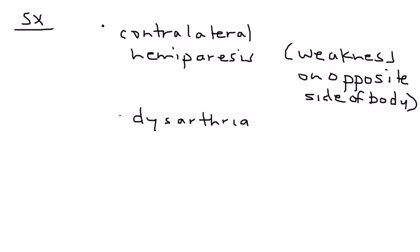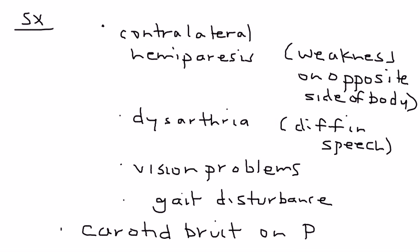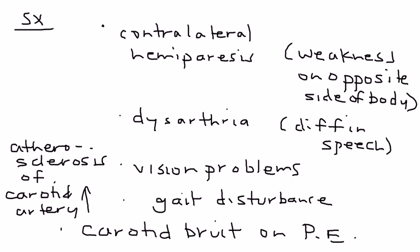Dysarthria is a difficulty in speech, slurred speech. Vision problems are also very commonly reported in TIAs. Gait disturbance is another one. Another symptom is a carotid bruit that you can auscultate on physical exam. The reason you're hearing this bruit is because of the atherosclerosis of the carotid artery. That's a very quick and inexpensive test you can do before ordering any expensive tests.